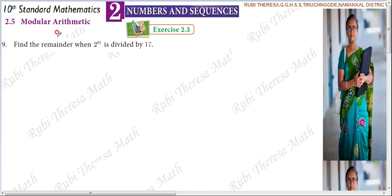Exercise 2.3: Find the remainder when 2 raised to the power 81 is divided by 70.